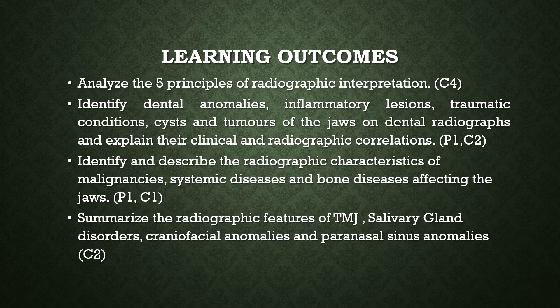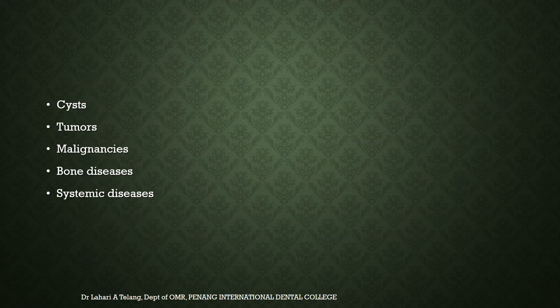The learning outcomes are similar to those outlined in part one: to analyze the five principles of radiographic interpretation; to identify dental anomalies, inflammatory lesions, traumatic conditions, cysts and tumors of the jaws on dental radiographs; and to explain their clinical and radiographic correlations. We will also identify radiographic characteristics of malignancies, systemic diseases, bone diseases, TMJ and salivary gland disorders, craniofacial anomalies, and paranasal sinus anomalies. In this lecture, we specifically stress on cysts, tumors, malignancies, bone diseases, and systemic diseases of the jaws.